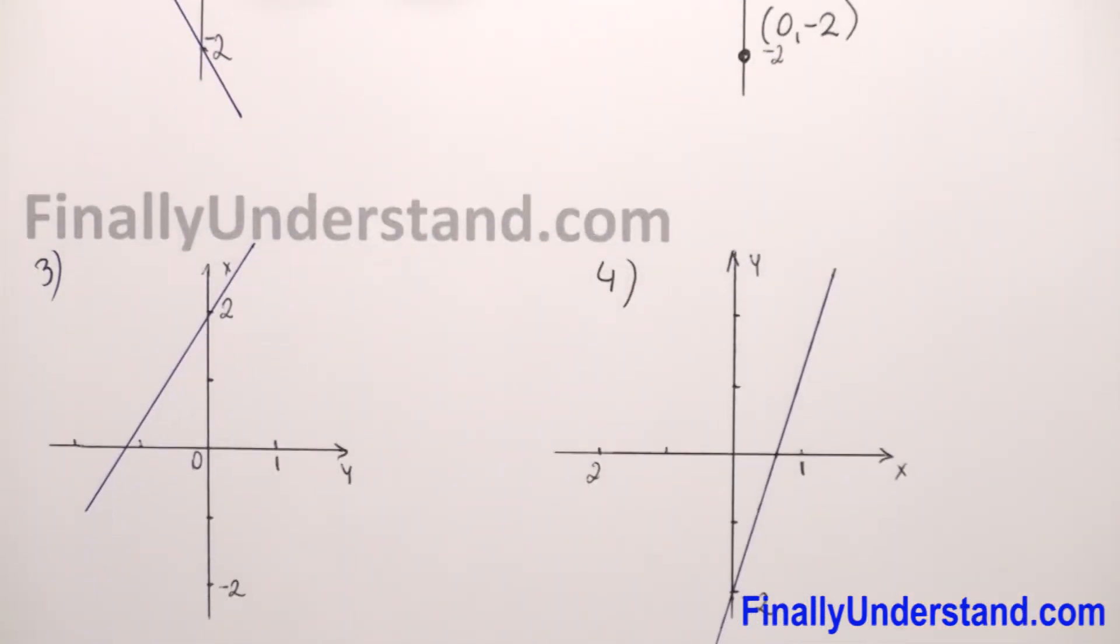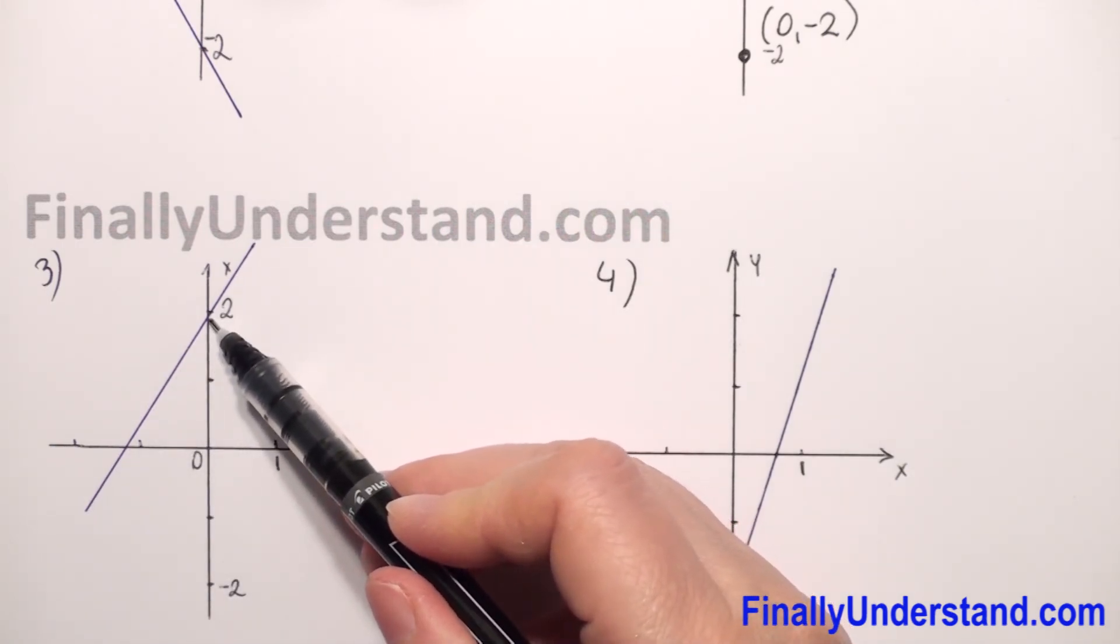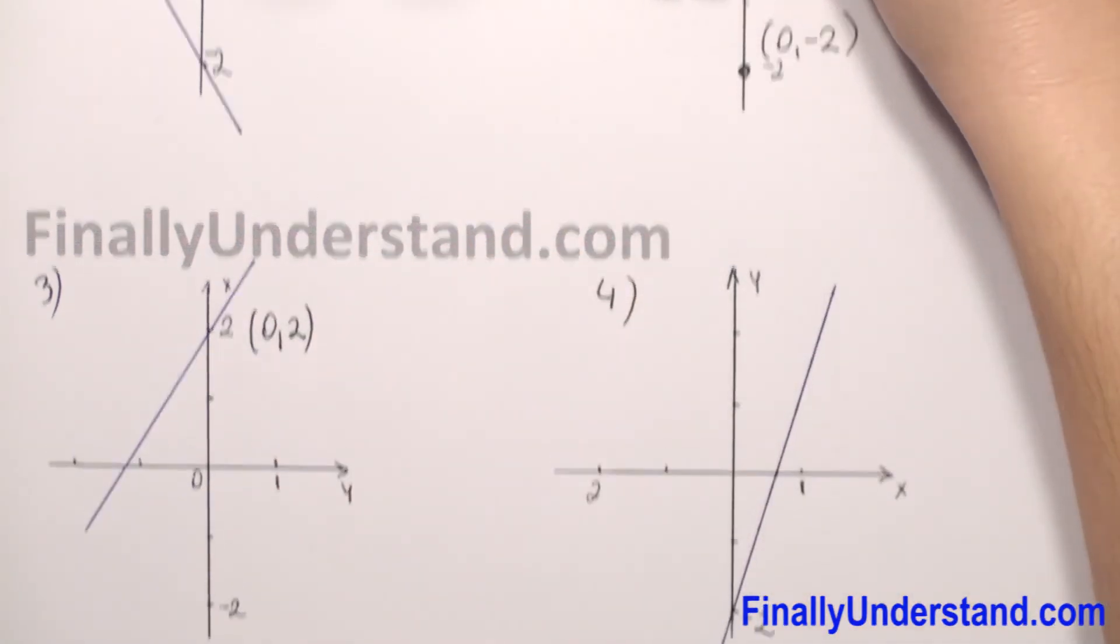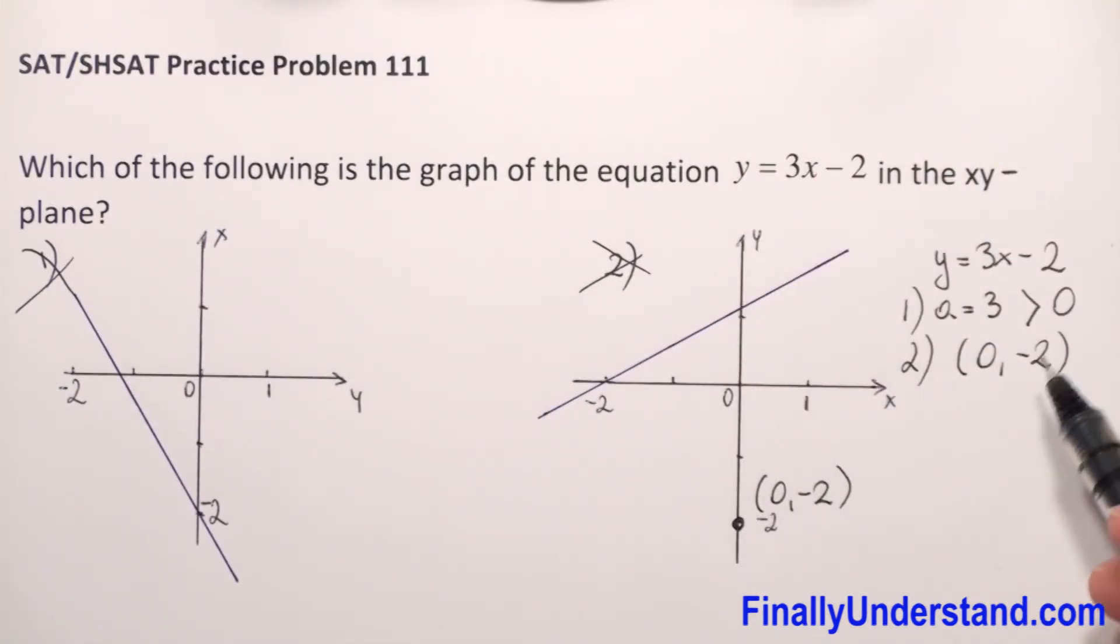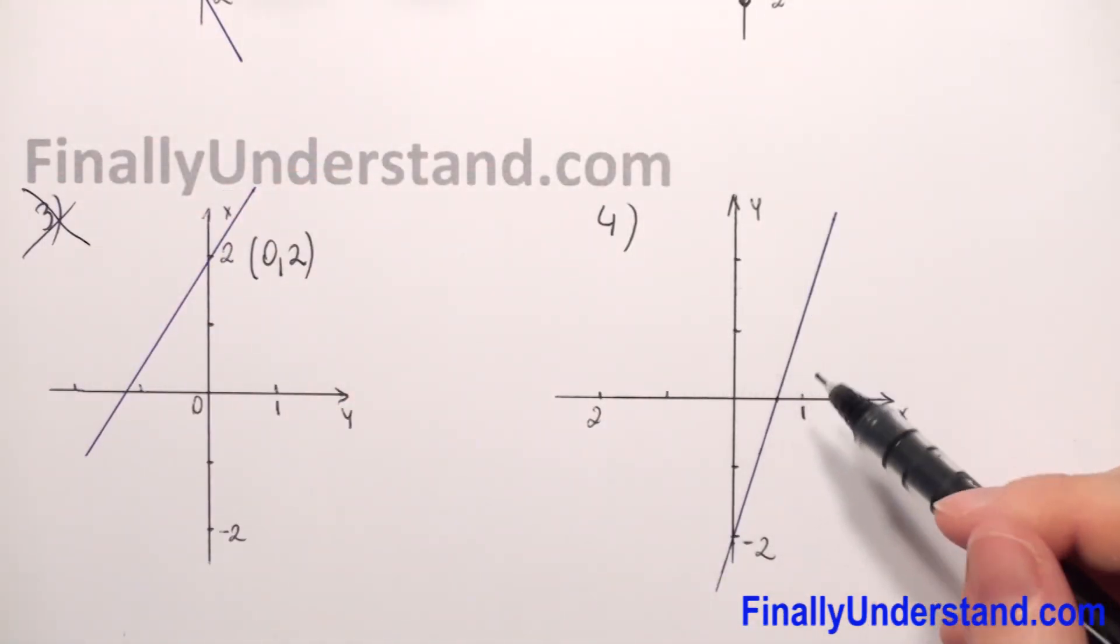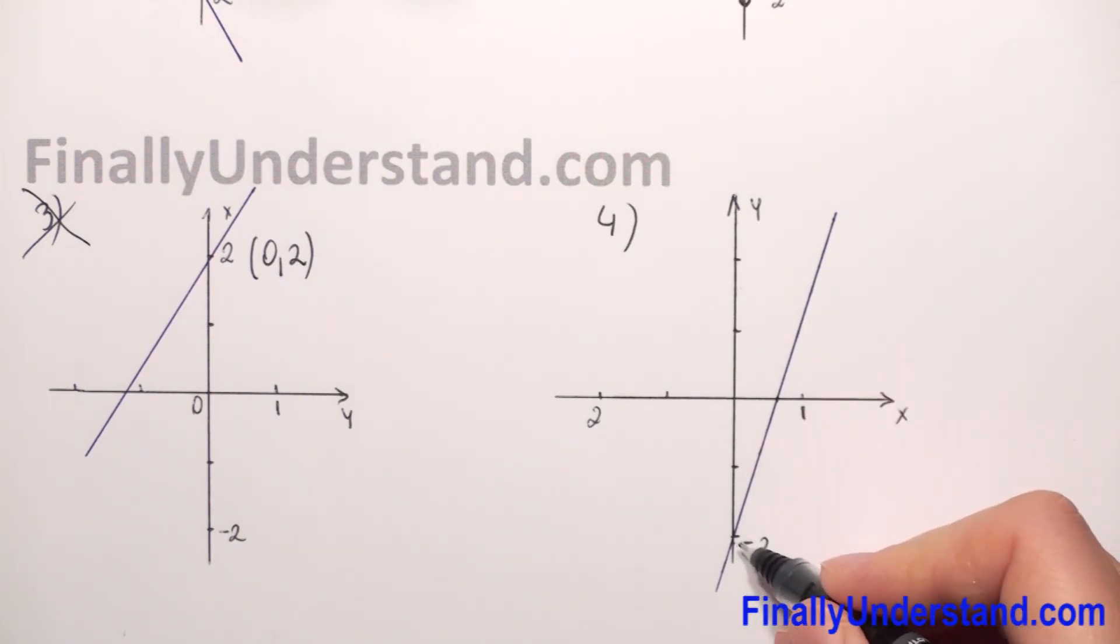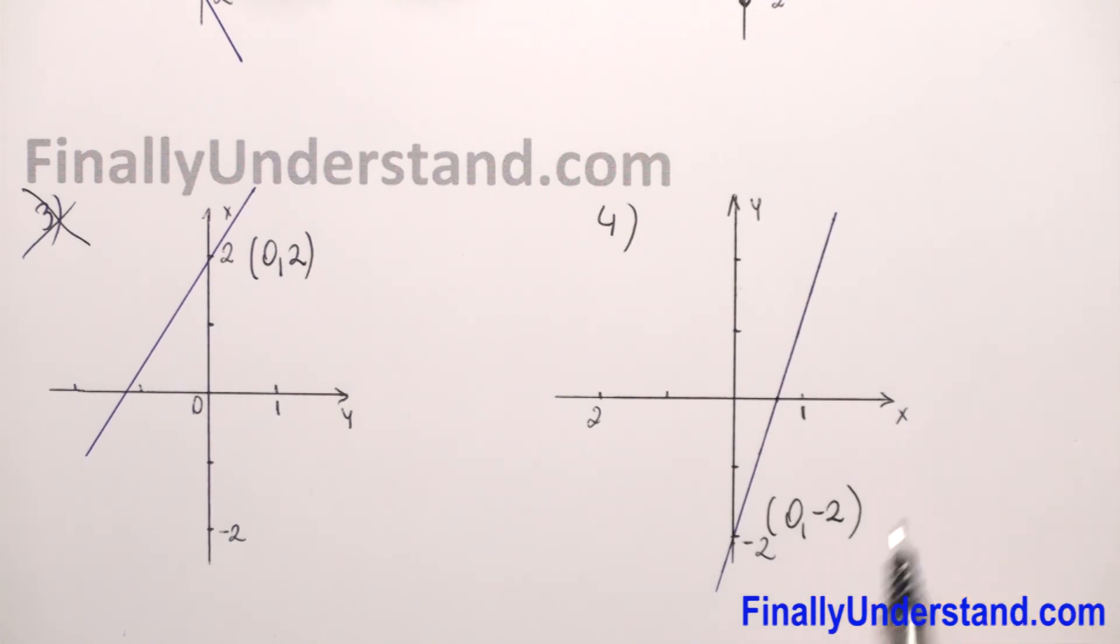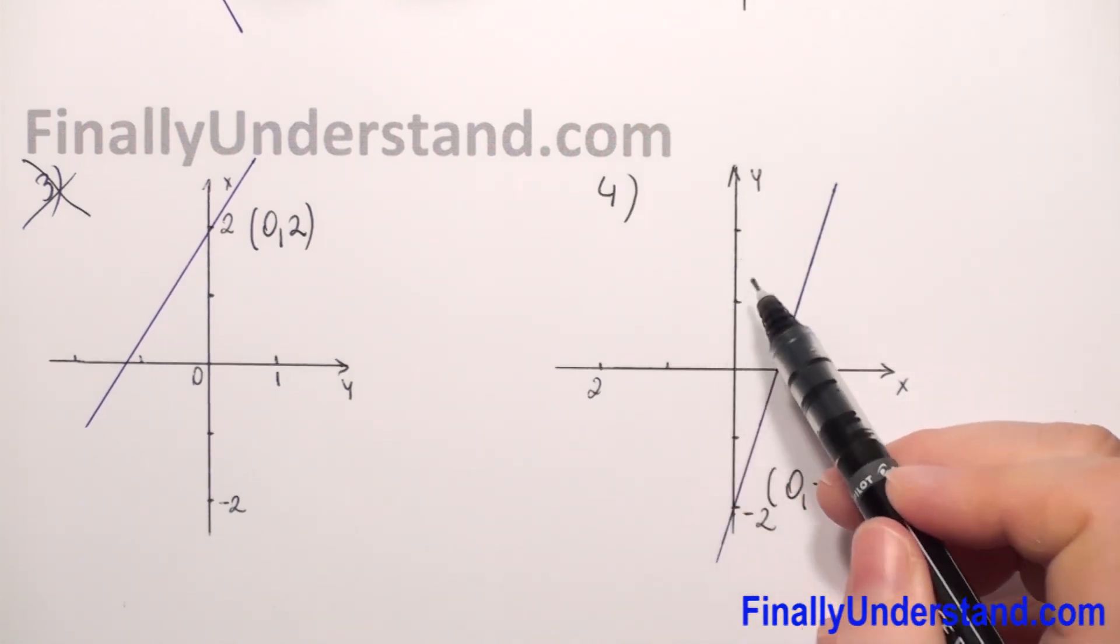Also, the third we have that our function is going up, but the y-intercept is in point 0, 2. So again, it's not our function, and the last function is going up, and the y-intercept is in point 0, negative 2. So this is our function, so the solution is in the fourth graph.